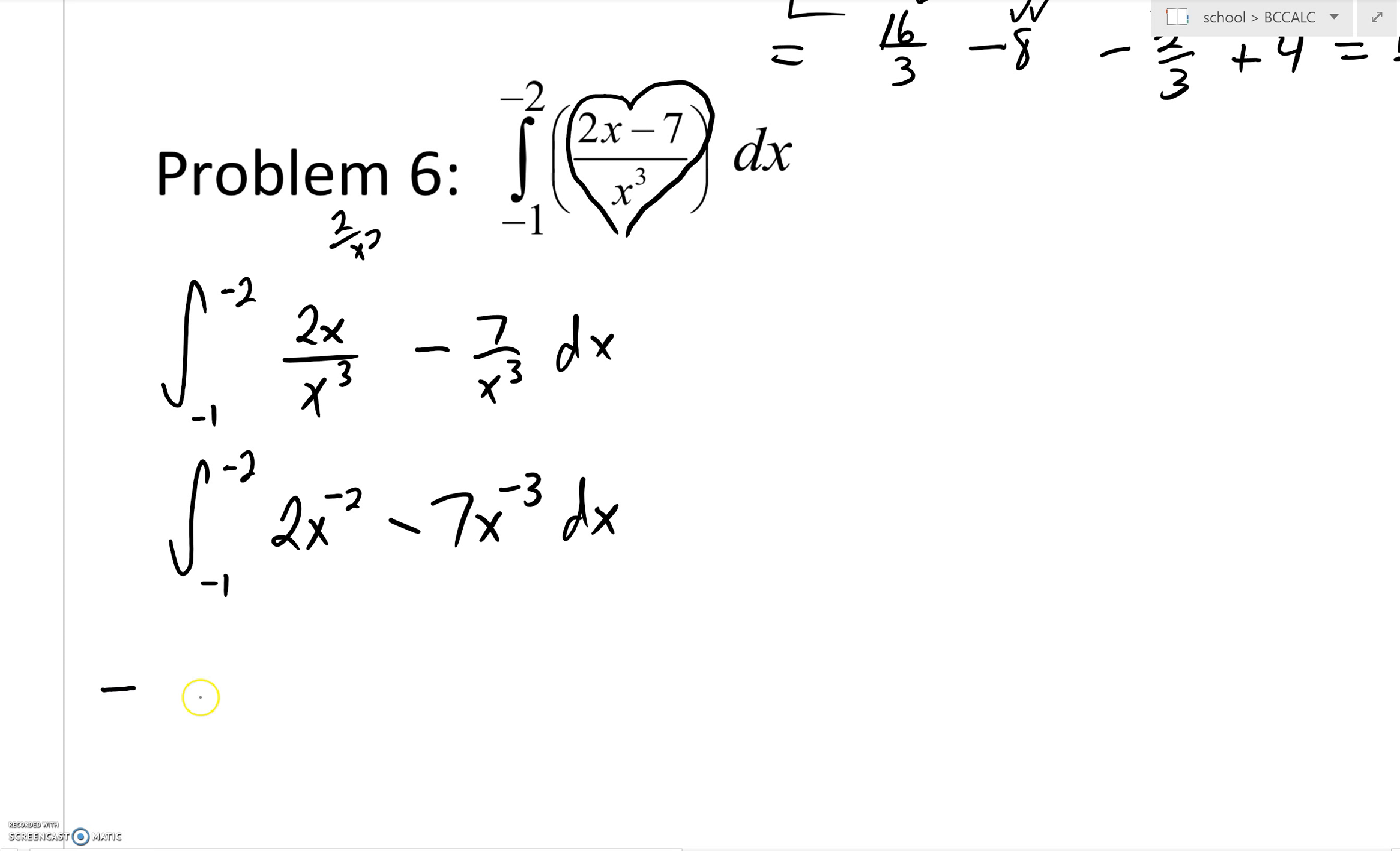But I do think most kids do go ahead and they change the bound. So you want to have your smaller number down below, a bigger number up on top. And that's definitely allowed and definitely okay.